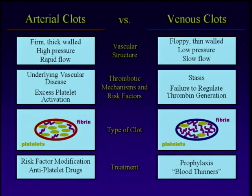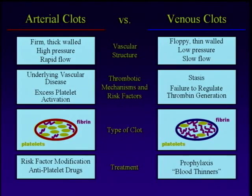If you think about the veins as a floppy, thin-walled, low-pressure, slow-flow system, the problem of stasis — blood sitting around and not flowing as fast as it's supposed to — leads to clotting. We don't really get stasis in the arterial circulation because it's under high pressure and high flow. But by the time blood trickles through the capillaries and starts coming back to the heart, most of that pressure is lost and flow is quite slow. When we put people in bed in the hospital or do surgery and immobilize people, that all contributes to stasis.